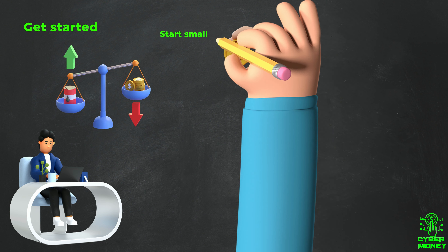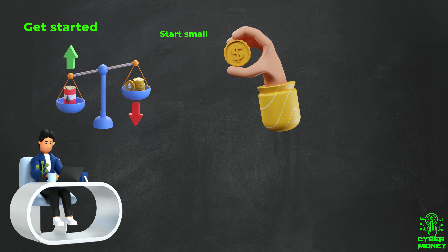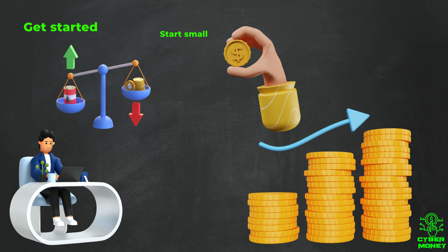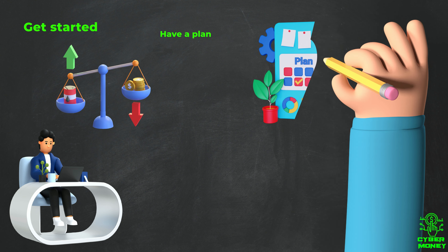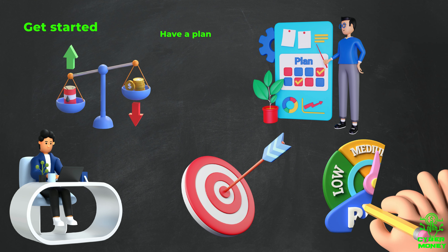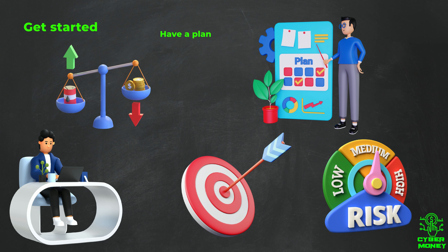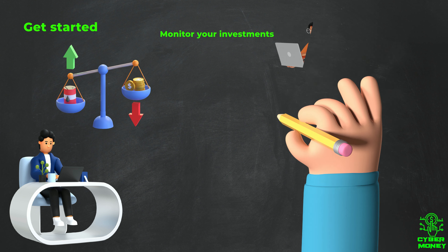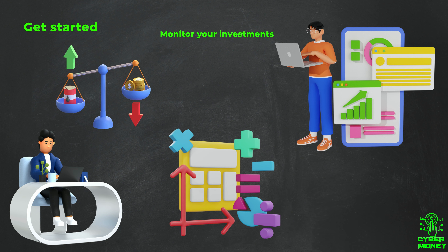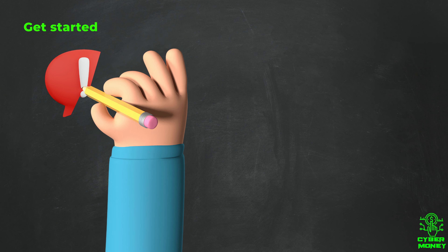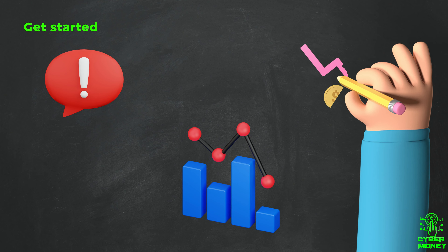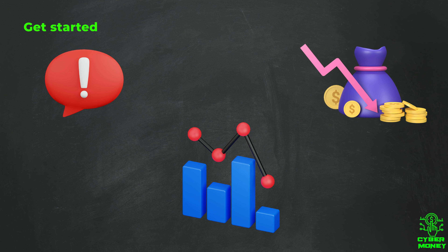Start small: when you start trading commodities, it's a good idea to start small and gradually increase your investment as you become more comfortable with the market. Have a plan: set clear goals for your trading and investing, including a trading strategy, a risk management plan, and an exit plan. Monitor your investments: keep an eye on the market and be ready to adjust your plan if necessary. Keep in mind that investing in commodities is considered a high-risk investment — the prices of commodities can be volatile, so it's not recommended to invest money that you can't afford to lose.